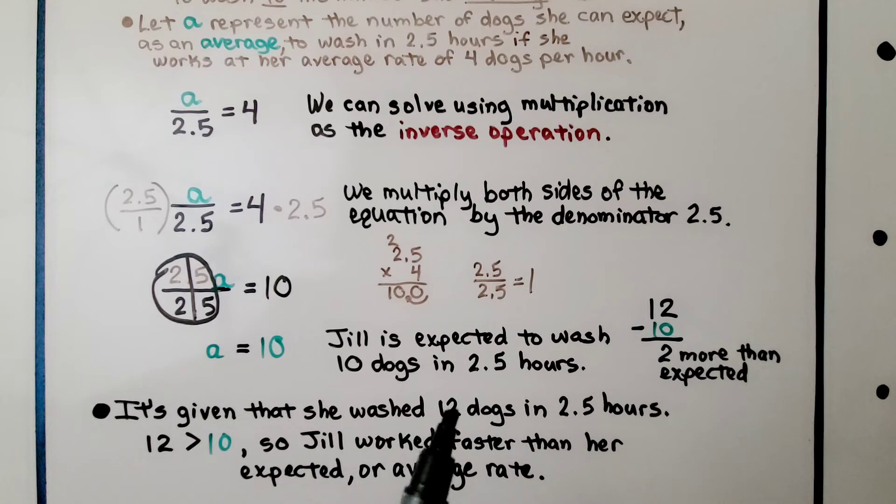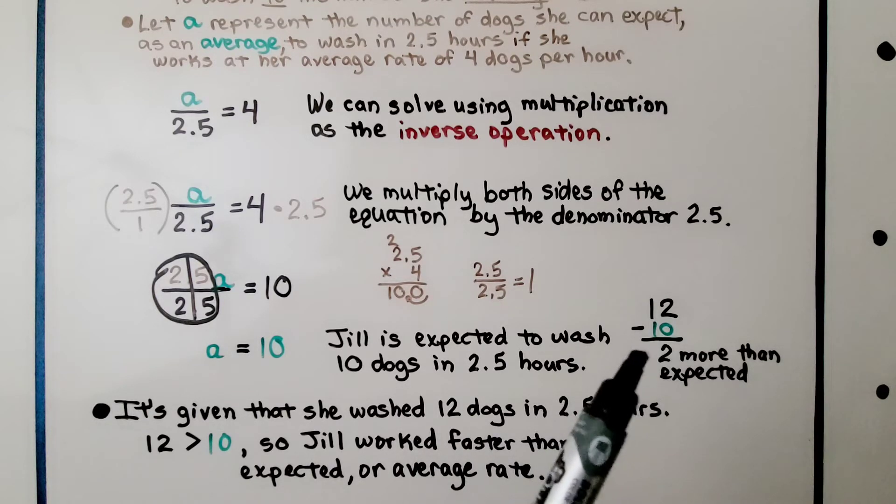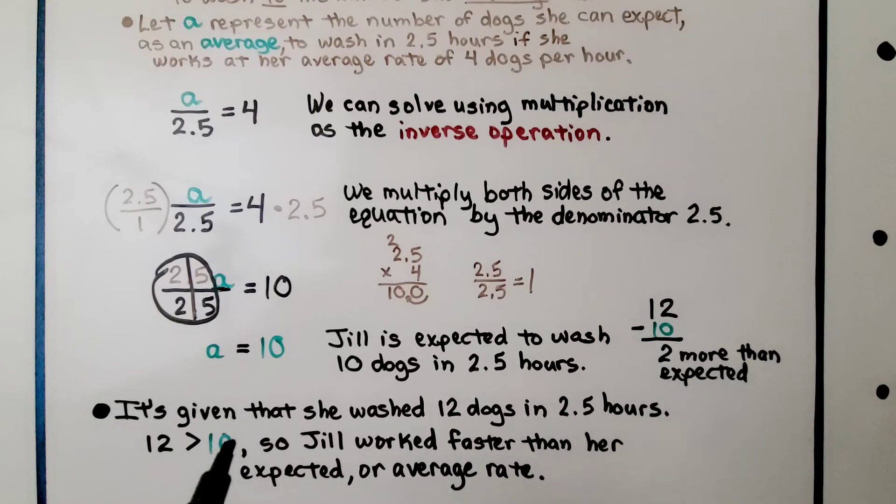It's given that she washed 12 dogs in 2.5 hours, and 12 is 2 more than 10. So Jill worked faster than her expected average rate. She was expected to wash 10 but she washed 12.